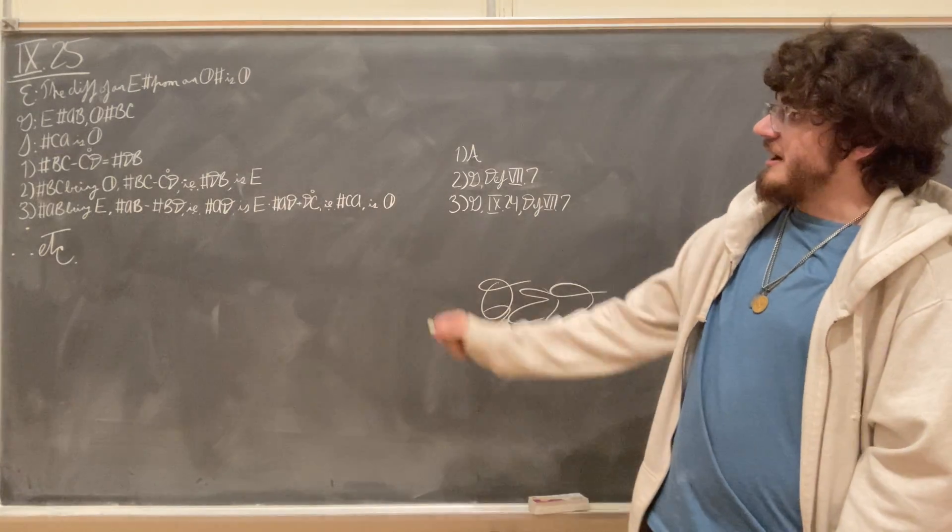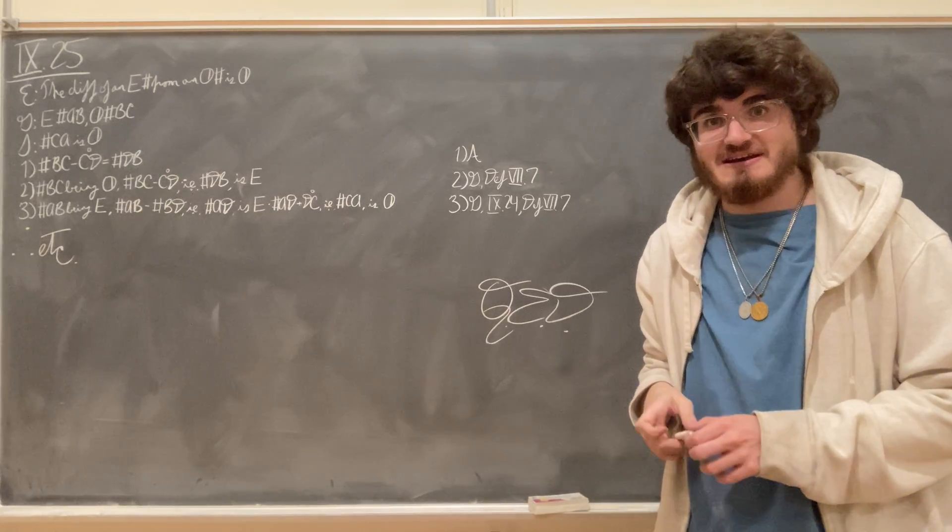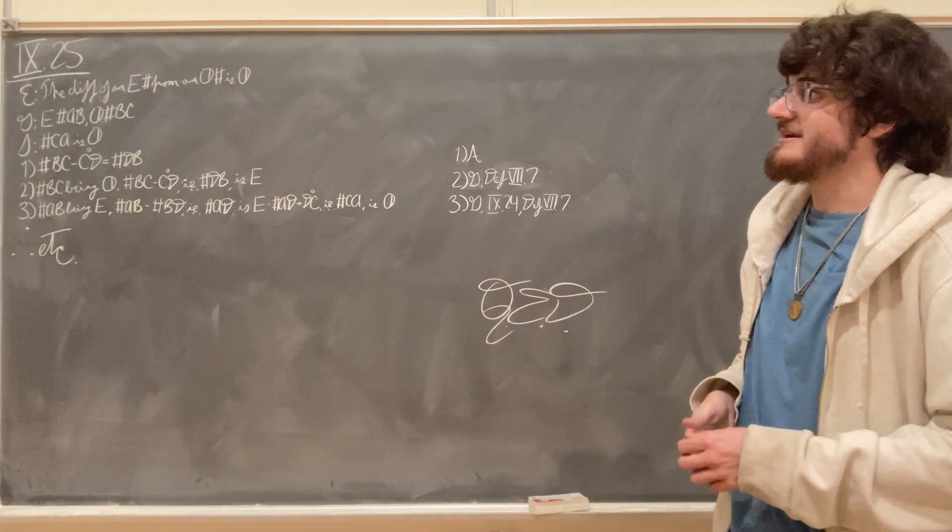We're given two numbers, A, B, and B, C. The number A, B is an even number, while the number B, C is an odd number.